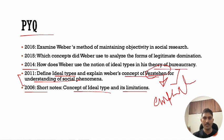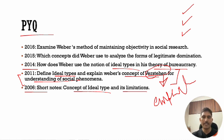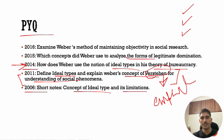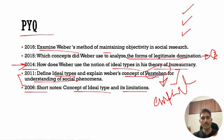In 2014, they asked how Weber uses the notion of ideal types in his theory of bureaucracy. Weber used the ideal type concept in his work on bureaucracy, religion, capitalism, and authority. In 2015, they asked which concept Weber used to analyze forms of legitimate domination. In 2016, they asked an indirect question: examine Weber's method of maintaining objectivity in social research.